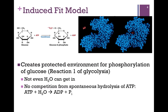This conformational change also provides a protected environment for the phosphorylation. The hexokinase closes its arms so tightly around the glucose and ATP substrates that there's no room for anything else — not even water can get in. This is very important because ATP can be spontaneously hydrolyzed to release inorganic phosphate and ADP. If this occurs, we have not successfully transferred that phosphate to glucose. So it becomes important that we exclude water so that we don't have this competition for the actual catalytic reaction we want to carry out.